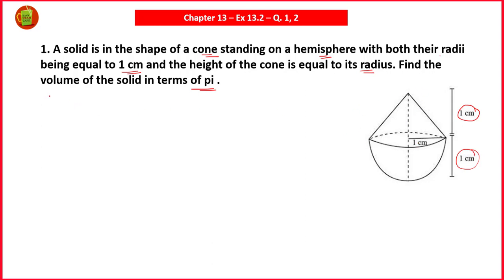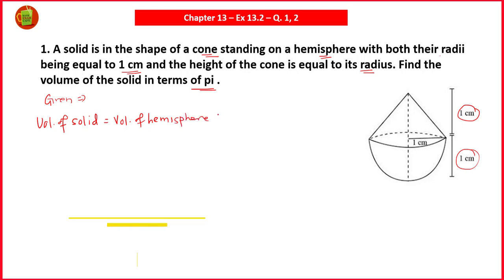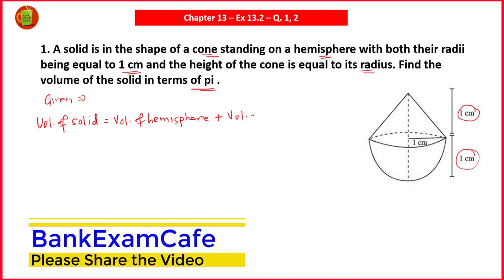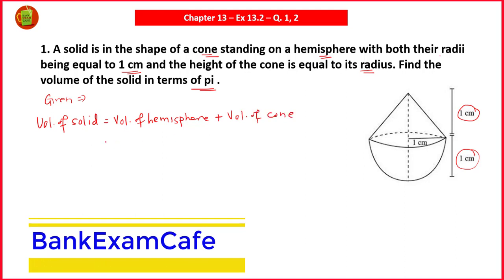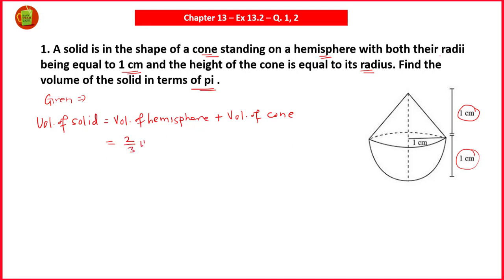So first we need to find the volume of the solid. I will explain how to solve it rather than writing all the given things. The volume of the solid equals the volume of the hemisphere plus the volume of the cone. So volume of hemisphere is (2/3)πr₁³ plus volume of the cone which is (1/3)πr₂²h.